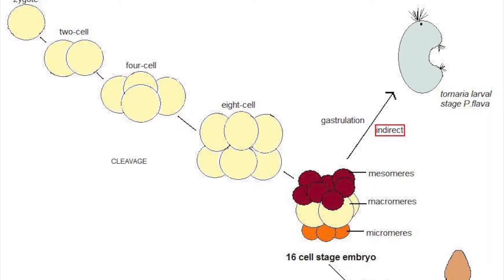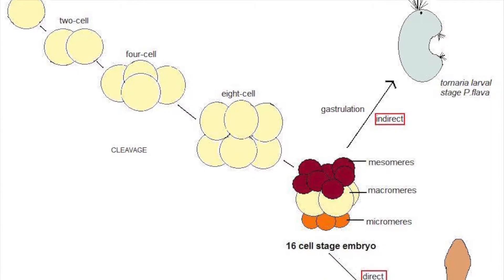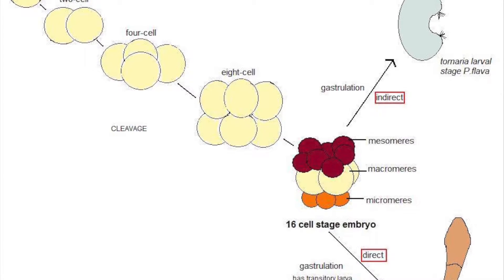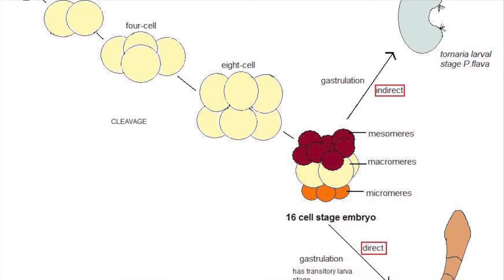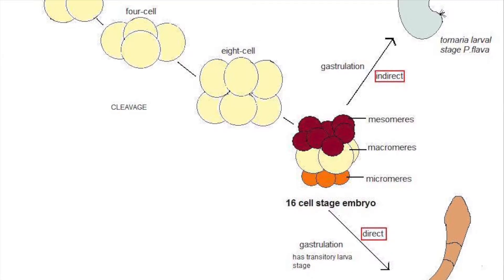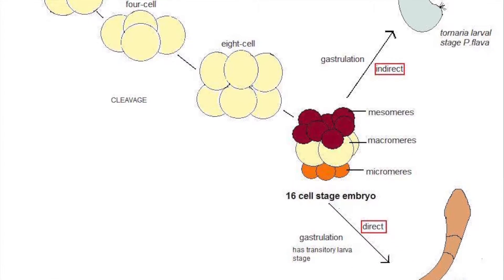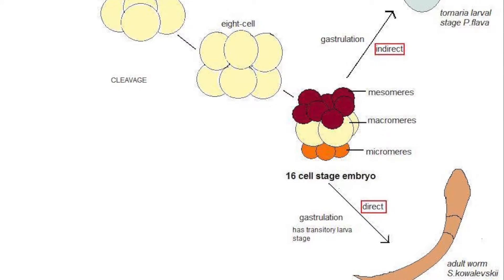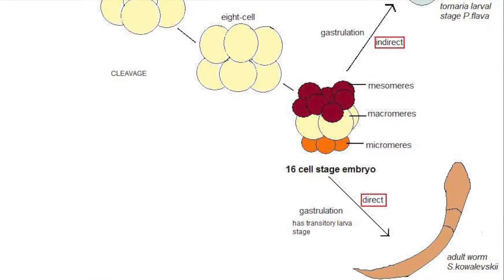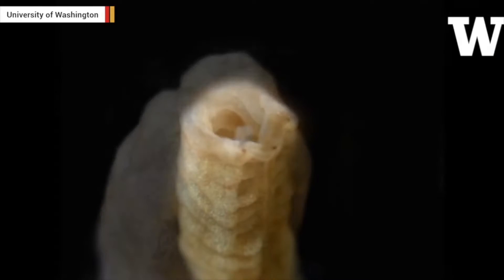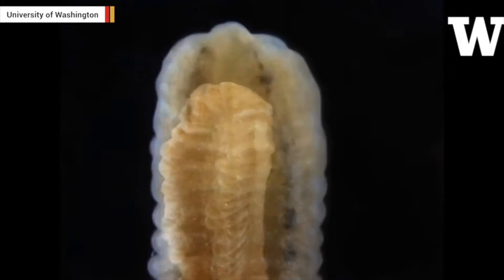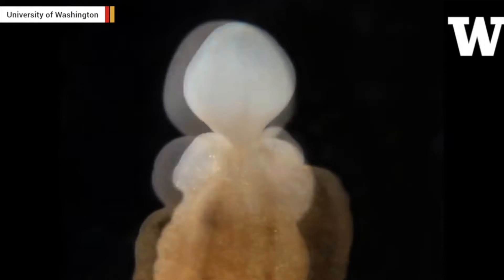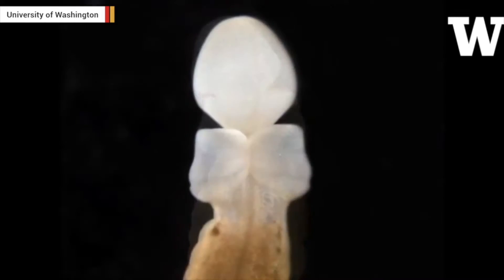Hemichordata are known to develop in two ways: either directly or indirectly. Indirect development includes a larval stage which feeds on plankton before turning into an adult worm. Direct development bypasses this larval stage and develops straight into an adult worm. Interestingly, they also have the ability to regenerate, which can be beneficial for human health.